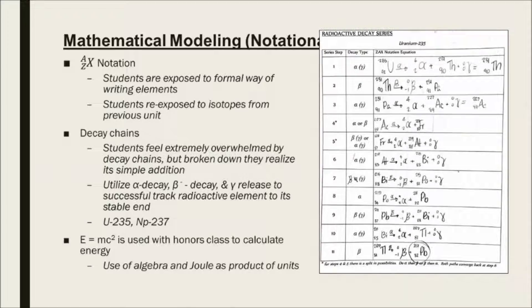In the unit, I teach students to use ZAX notation, which is formally used for describing elements with their isotopes. I have them run through decay chains — I throw up a full chain at first and the kids are overwhelmed, but when I break it down step by step with alpha and beta particles they find it quite easy and work through it fluently within a class period. For my honors students, we work through problems using E=mc², and later in the year we look at the Joule as a unit more closely. The kids are really excited to use that famous equation as it was intended, and it gives them real confidence.